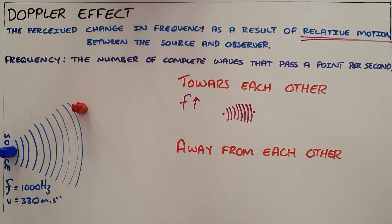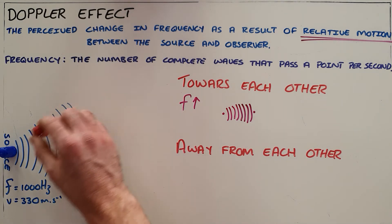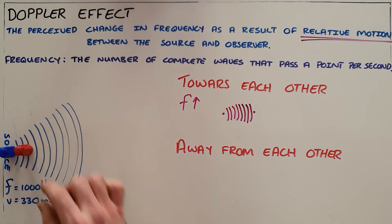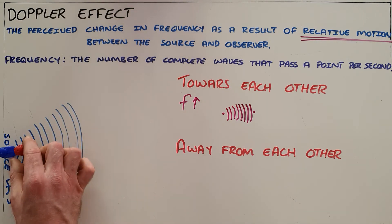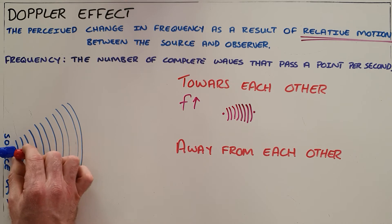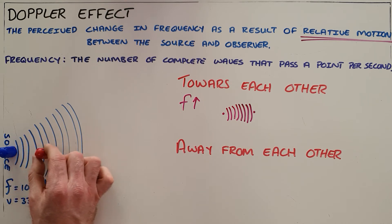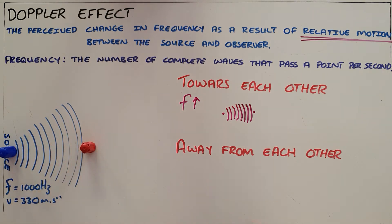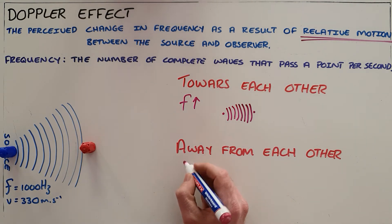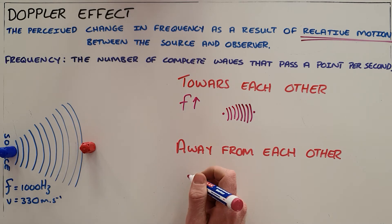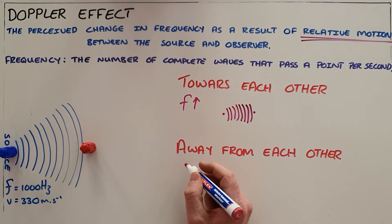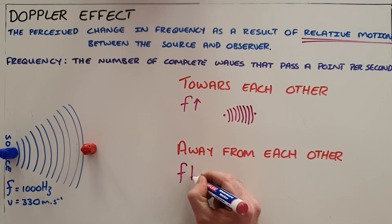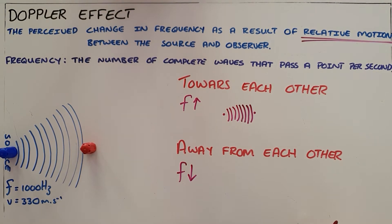By the same standard, if there is relative motion in which the source or observer move away from each other, as the observer moves away the perceived distance between the waves is going to increase. As a result, they are going to detect fewer waves per second, so we say that the frequency decreases.